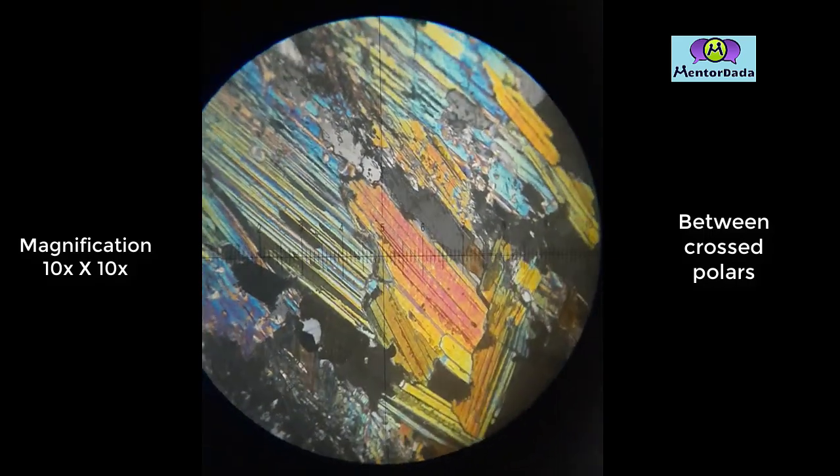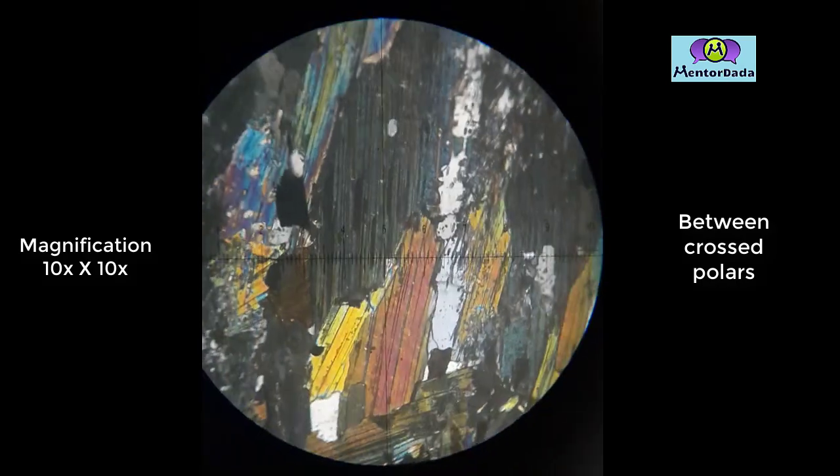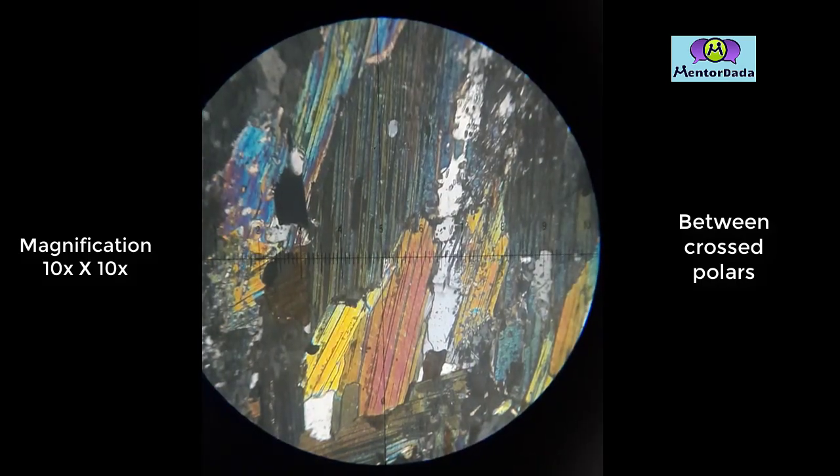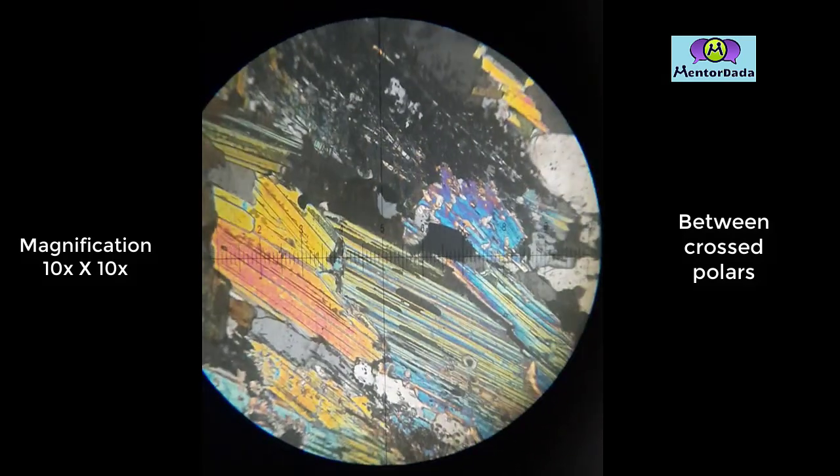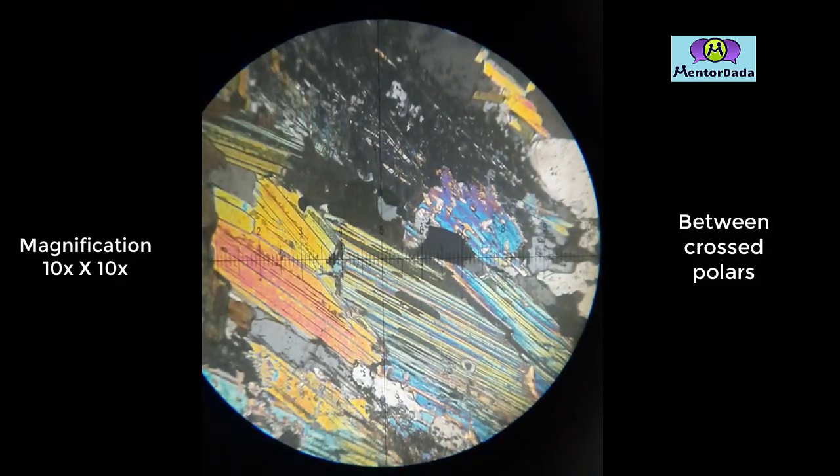Interference color is second order to third order, anomalous or variegated interference color. Bi-refringence is quite high.